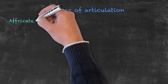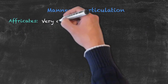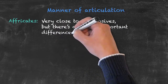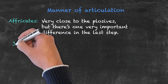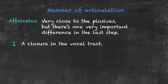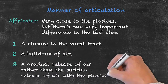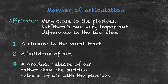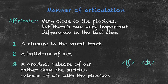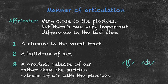Next, we have our affricates. This manner of articulation is very close to the plosives. However, there's one very important difference — in the last step. With the affricates, we have a closure somewhere in the vocal tract and a buildup of air, but this time we have a gradual release of air, rather than the sudden release of the plosives. There are two examples of these sounds, and they are CH and J.